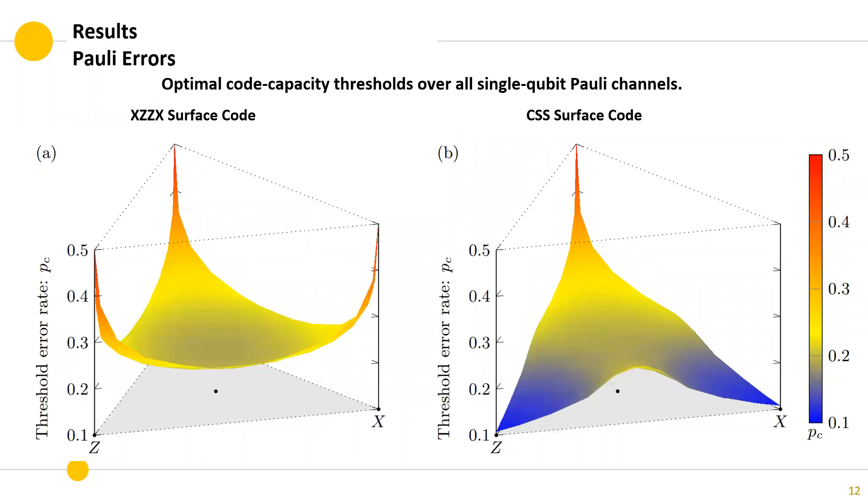Comparing between the conventional and XZX surface codes, where the labeled vertices correspond to pure X and Z noise, and the third vertex correspond to pure Y noise, and the center corresponds to depolarizing noise. For the XZX code, estimates closely match the zero rate hashing bound for all single qubit Pauli channels. For the CSS codes, estimates closely match the hashing bound for Y bias noise, but fall well below X and Z bias noise.